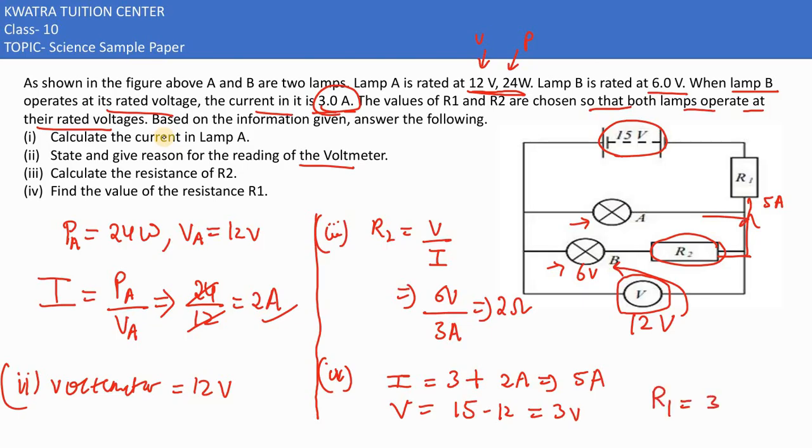So it would give you 3 over 5, which is like 0.6 ohm. That is the value of the resistance R1.